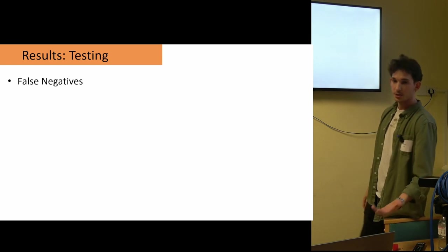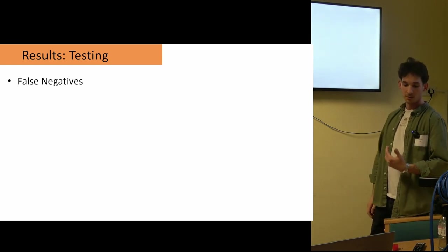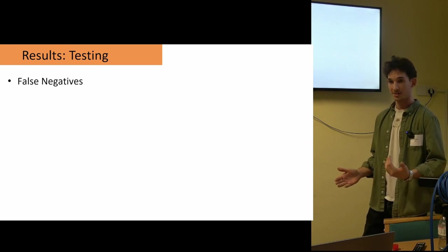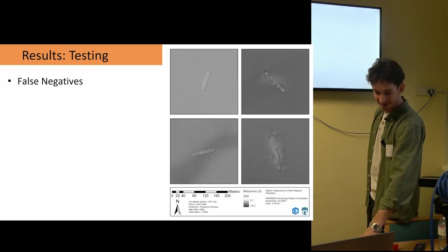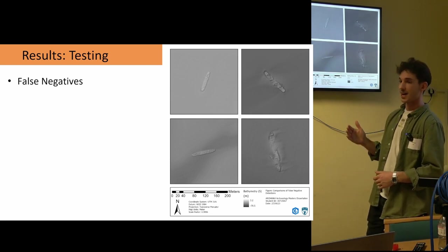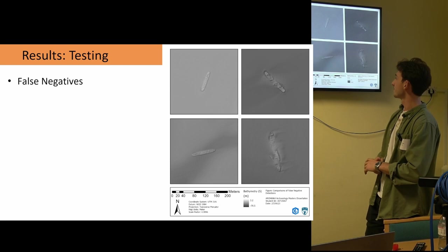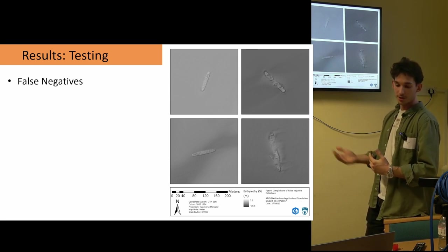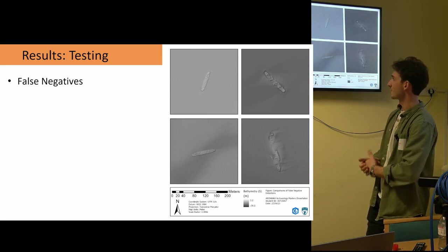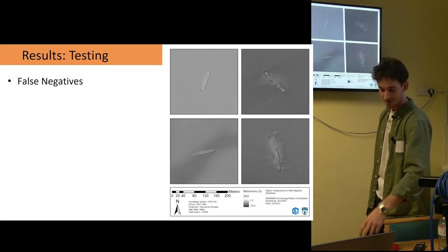Perhaps the most interesting to me, though, was looking at the results that were the false negatives. So these are intact shipwrecks that were being completely missed by the algorithm. And those look something like this, which is really interesting to me. We have really intact, distinct wrecks from the background topography, to us looking similar to the ones it was detecting earlier. So some really interesting questions being raised about why this is happening, and that comes down to the training samples I'll talk about later.